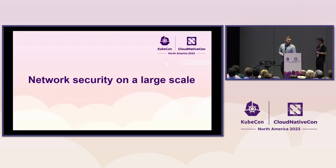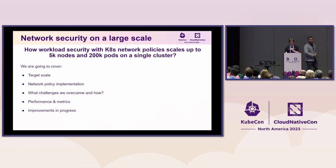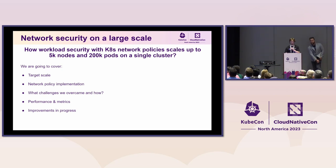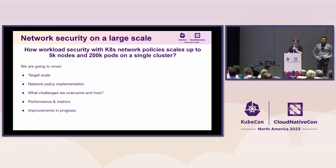Now I'm going to talk about network security on a large scale — particularly how workload security with Kubernetes network policies can scale up to 5,000 nodes and 200,000 pods on a single cluster. What I'll cover is the target scale we want to achieve, how network policies are implemented, what challenges we overcame and how, and the performance metrics and improvements in progress.